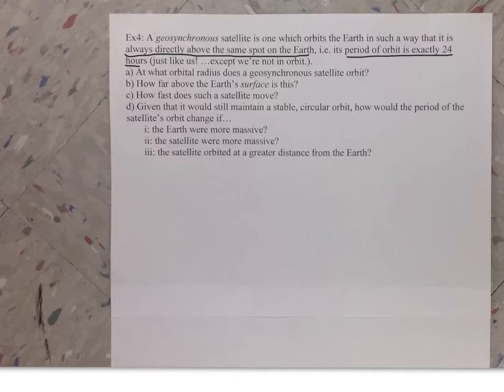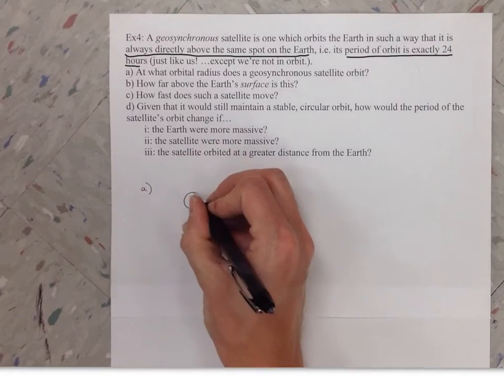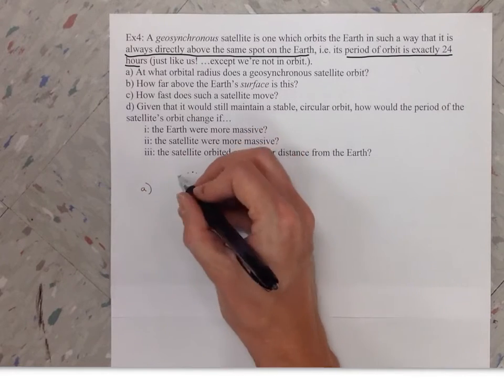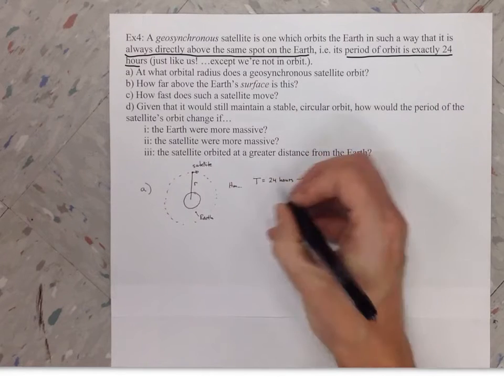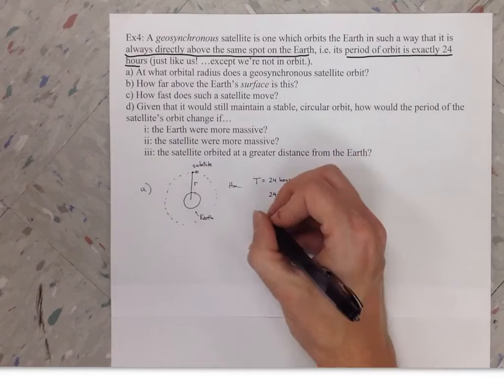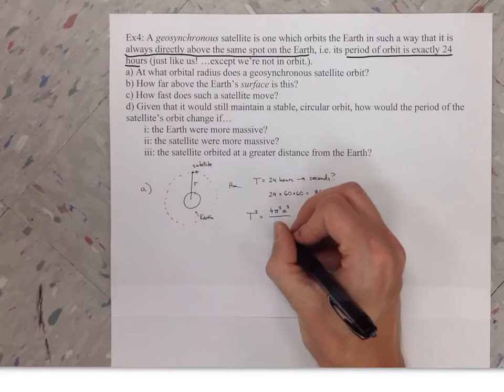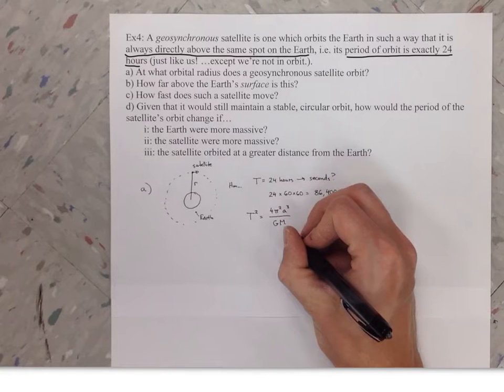The first question wants to know what's the orbital radius of that geosynchronous satellite. I inserted another video here where I'm working this out, and I'll pause it from time to time. Note the first significant fact, which is you're told the period. The orbital period always has something to do with the orbital radius.